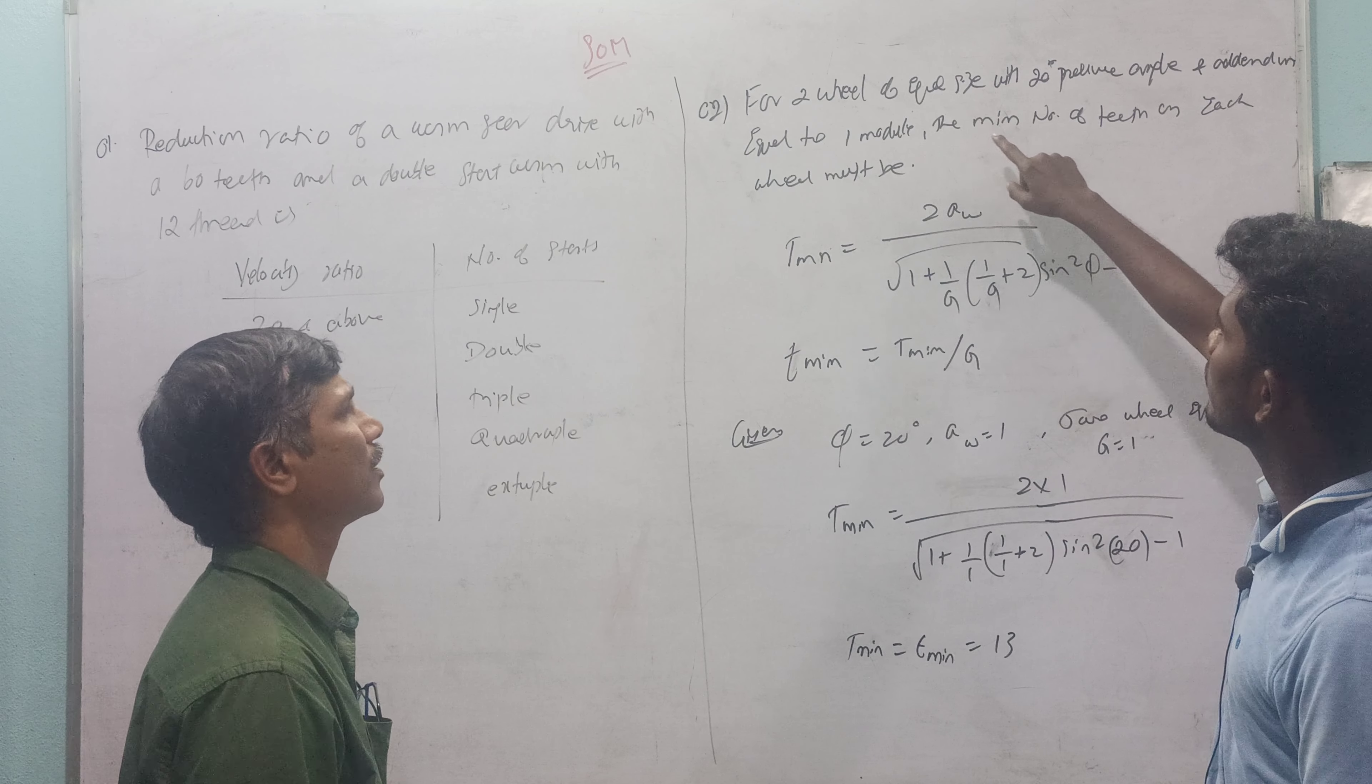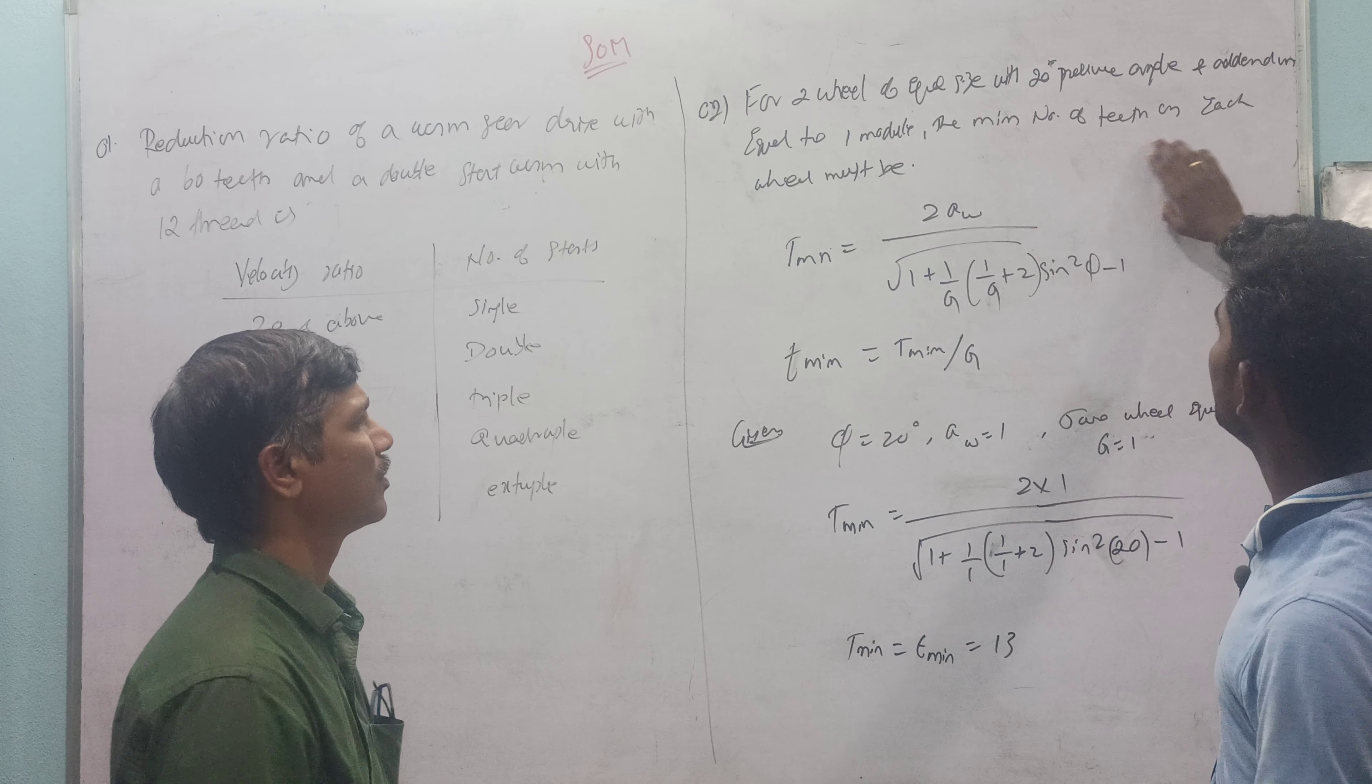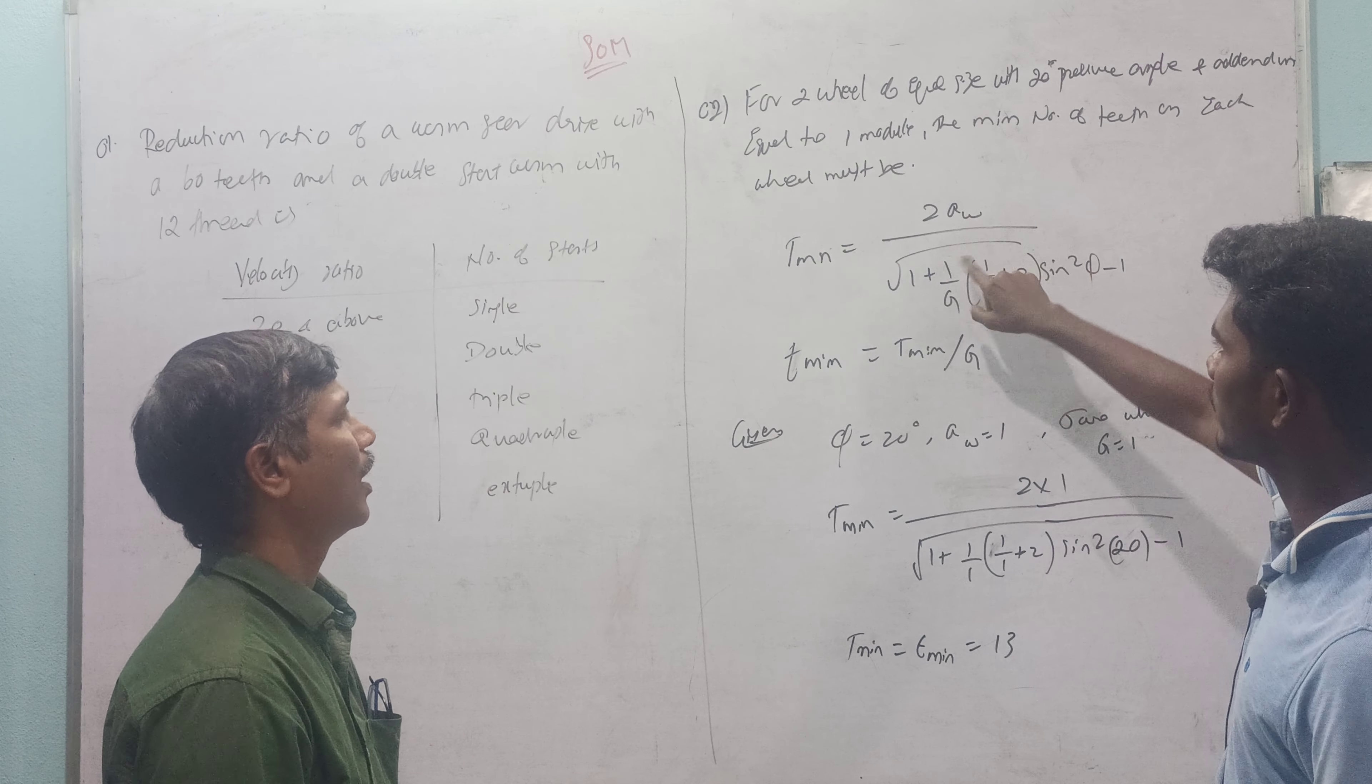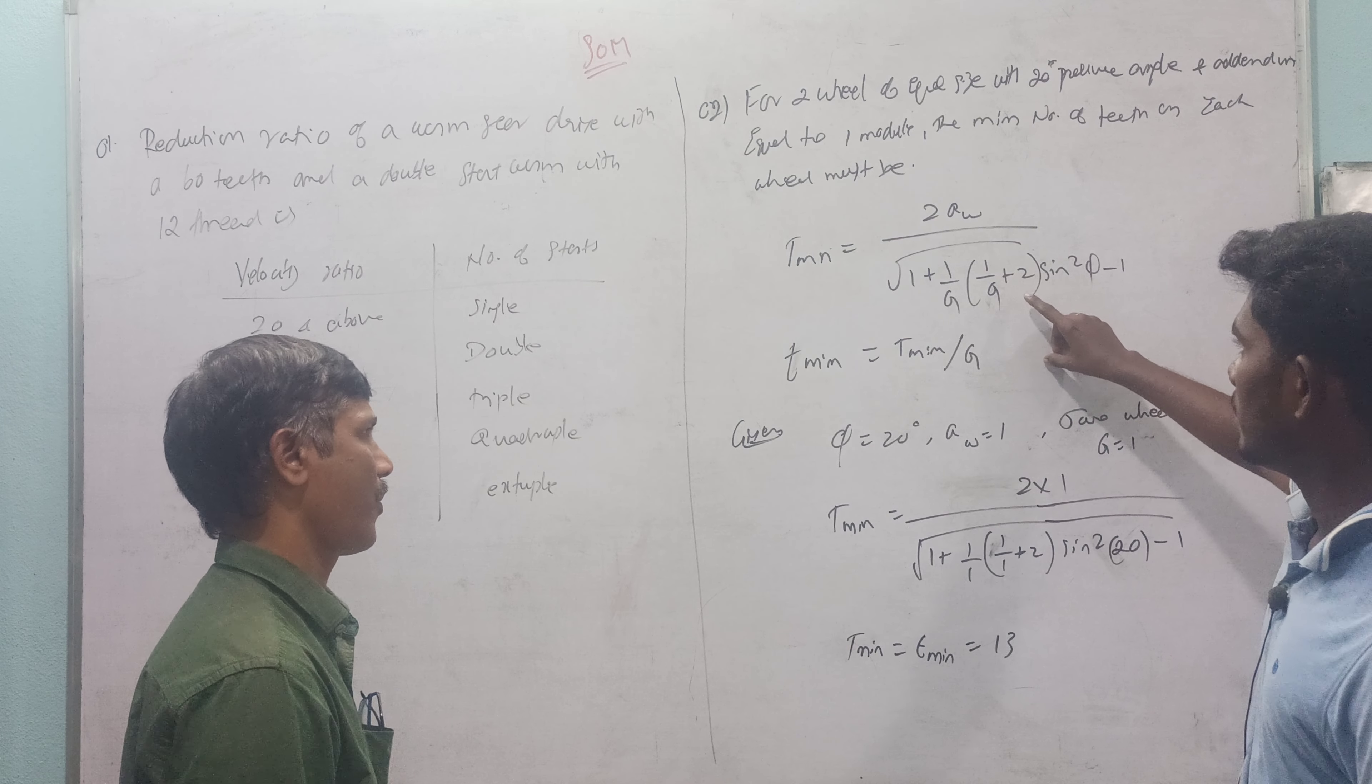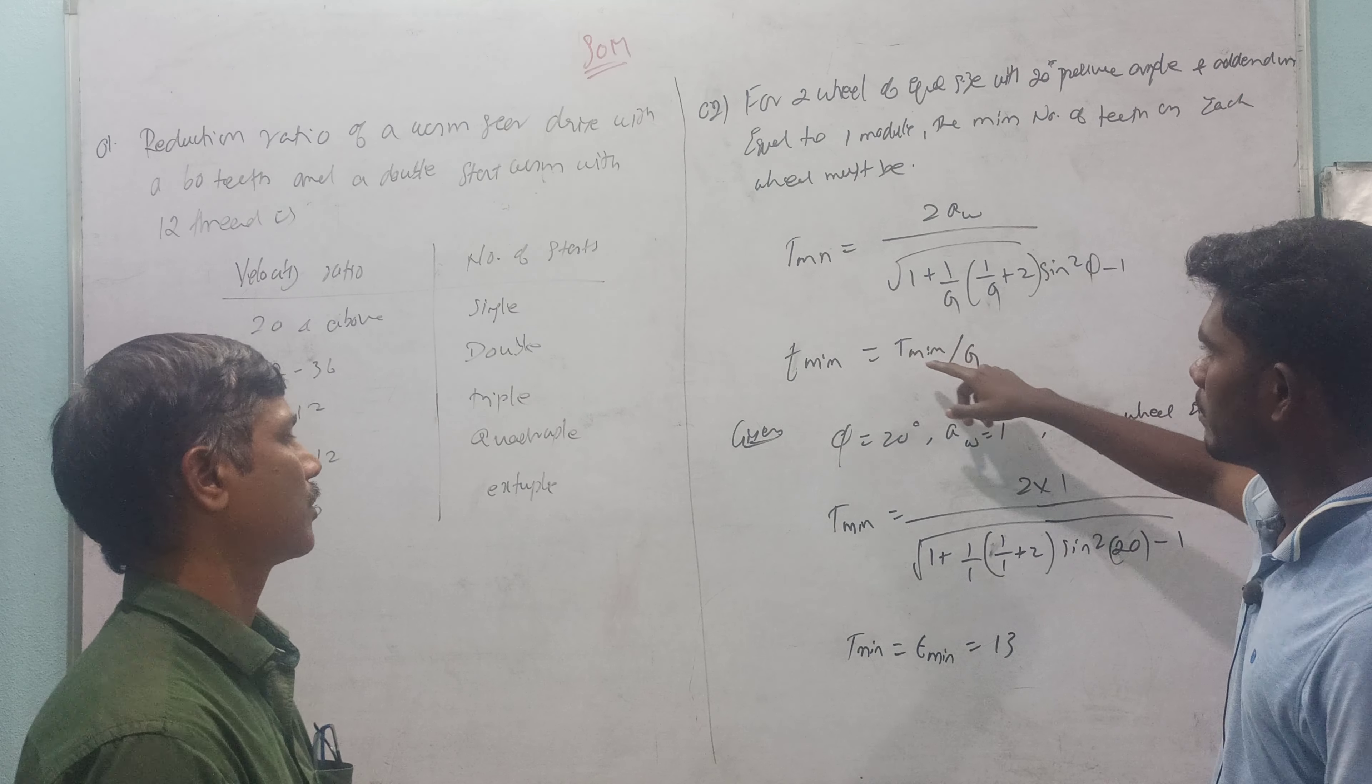For two wheels of unit wheel size with 20 degree pressure angle and addendum equal to one module, the minimum number of teeth on each wheel must be: 1 plus 1 by g into 1 plus g by 2 times of sin square phi minus 1. This is the formula for the small T minimum, and the cap T minimum is included by James.